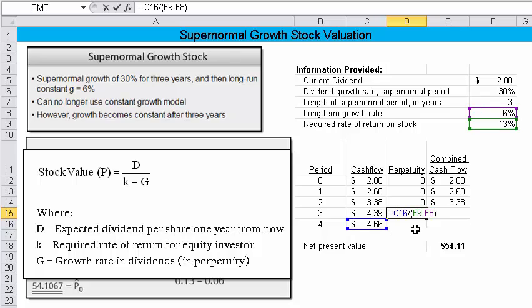Now, I'll hit the F2 and I'll show you how I calculated it. I took C13, that's the $4.66. That would be the expected dividend we would expect in year four. And I divide it by F9, which is the required rate of return of stock, minus the growth rate. And that's with parentheses. So that gives me, if you will, the present value at the end of year three.